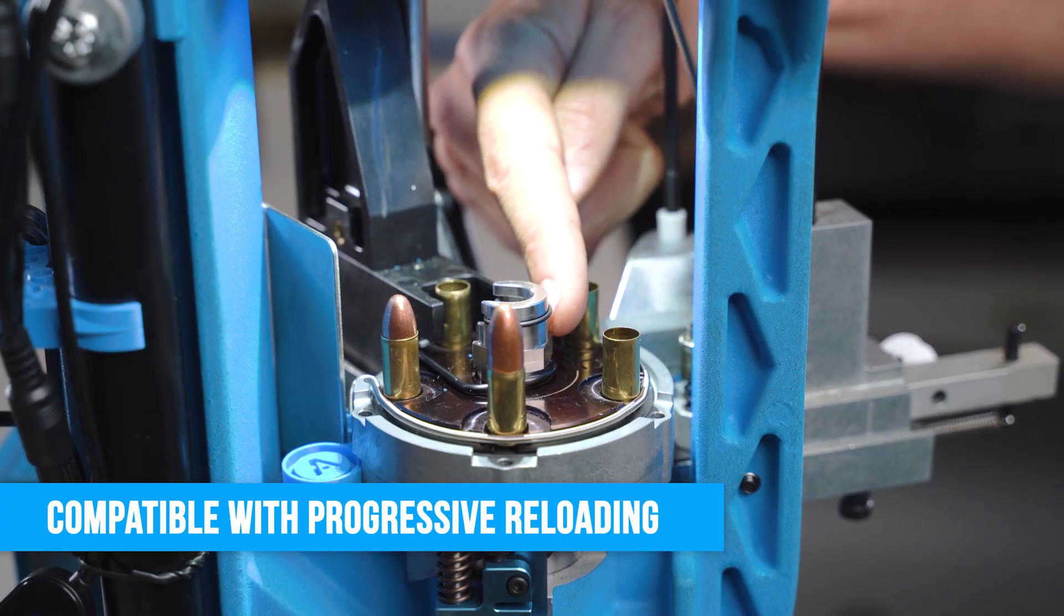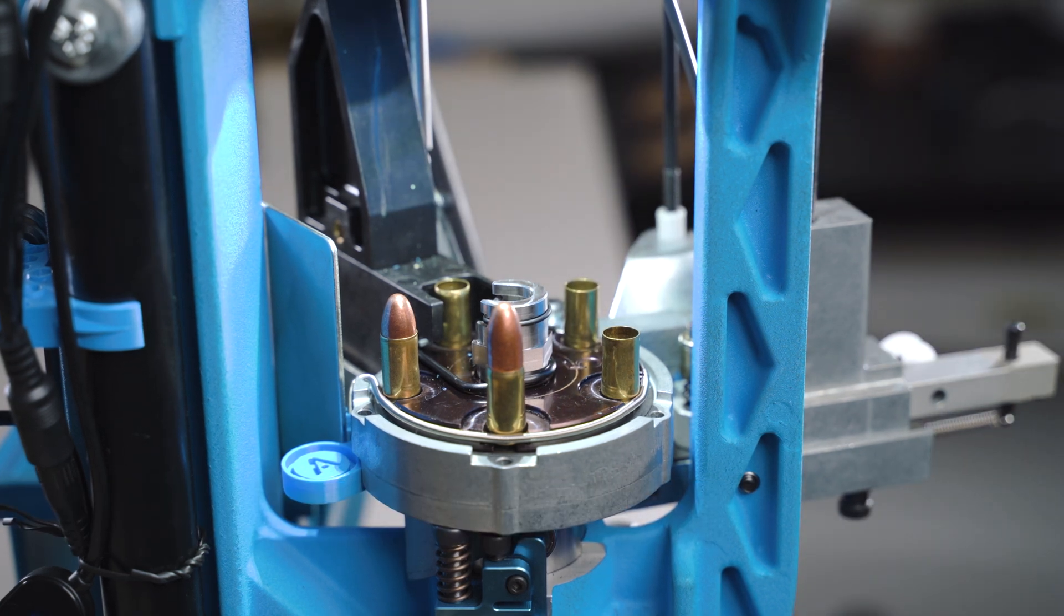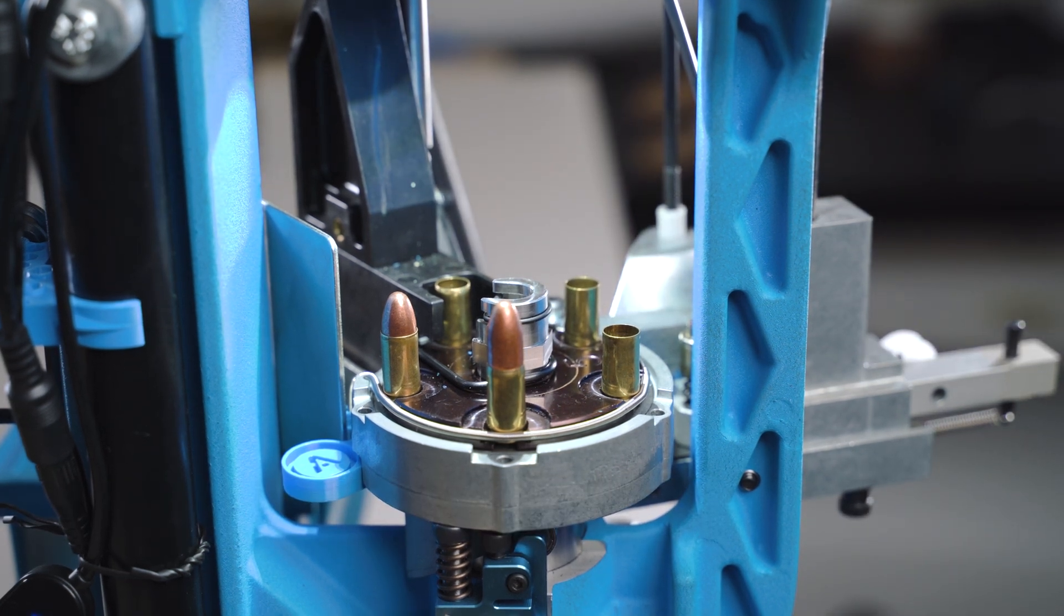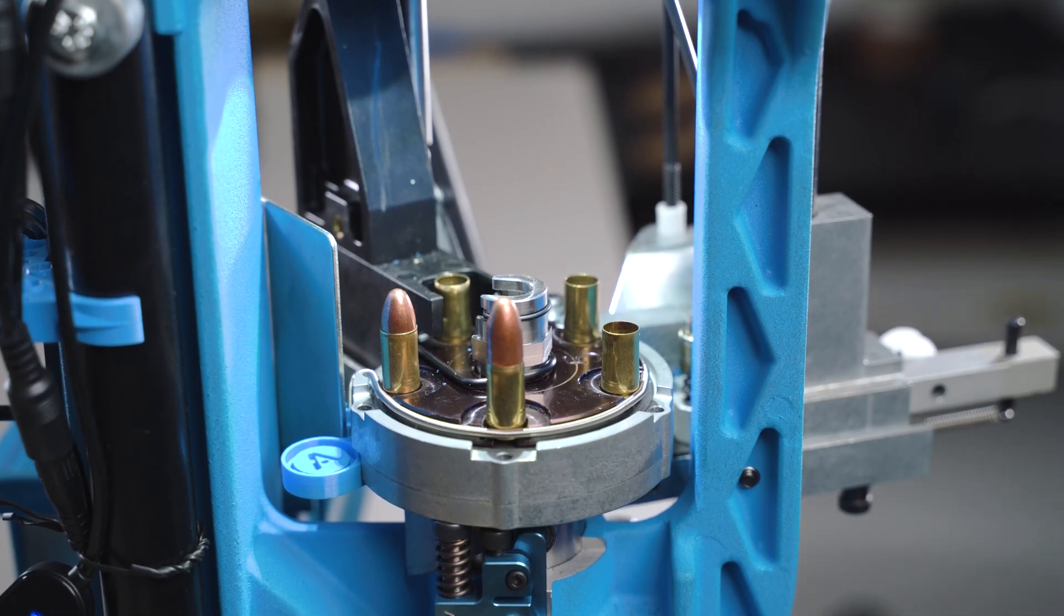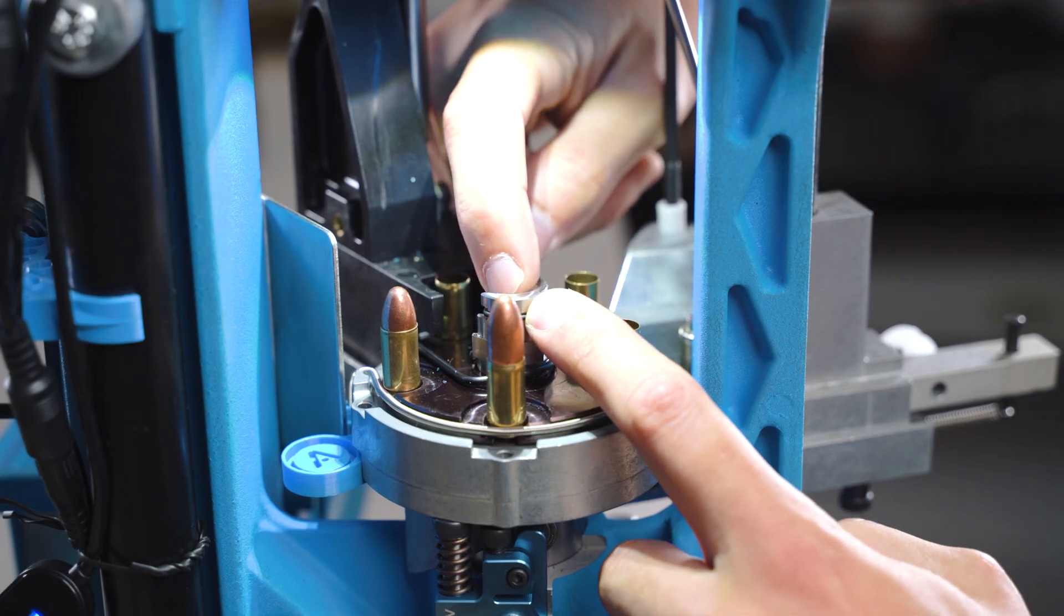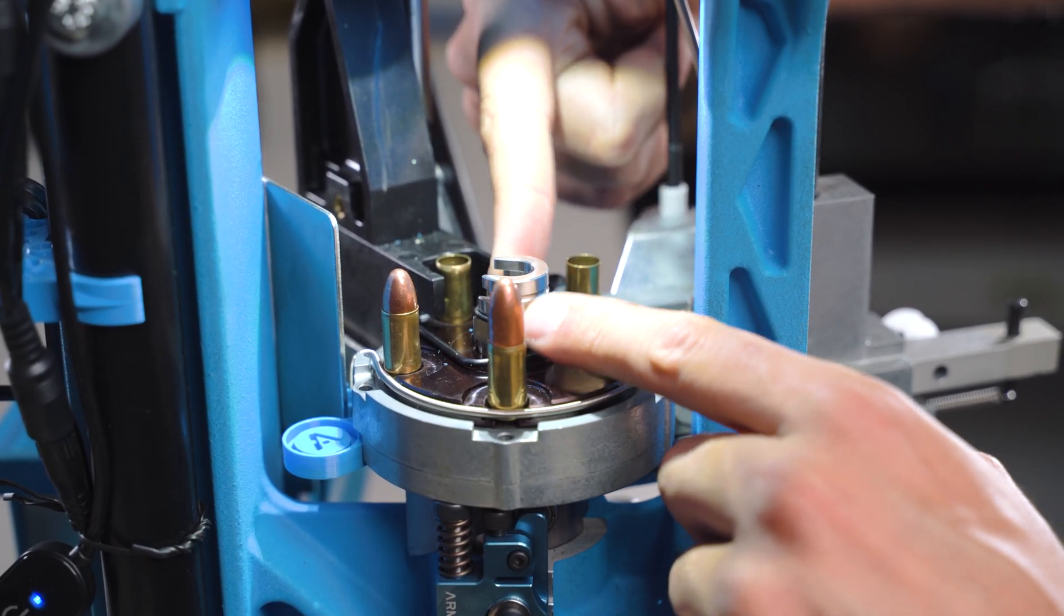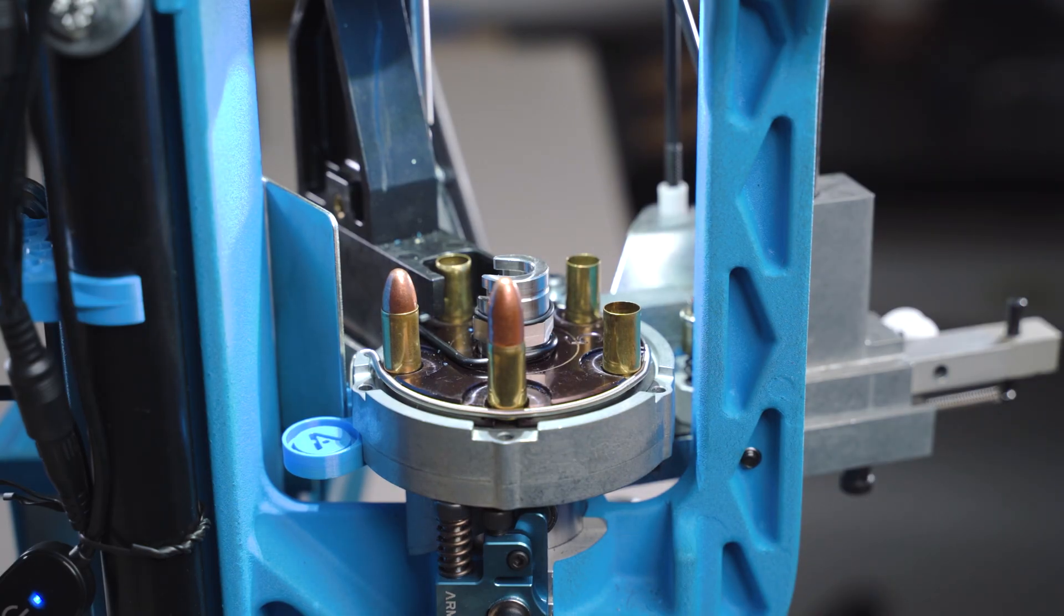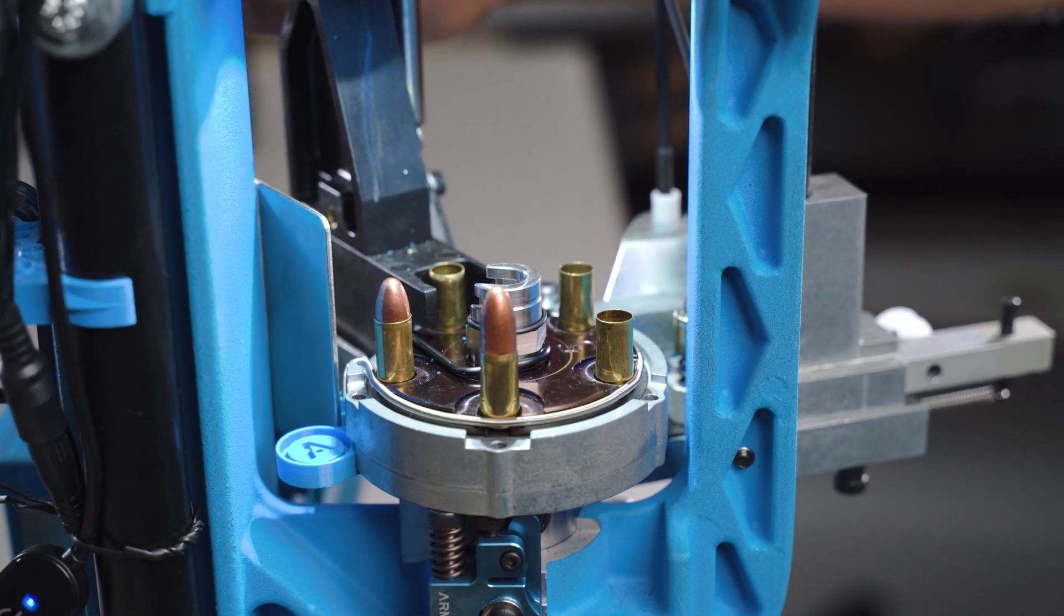I wanted to show you the shell plate bolt can stay in place. This makes changing between single stage reloading and progressive reloading super easy and simple. Just before you start progressive reloading be sure to pull down this rubber band to the lowest position so it will not interfere and this is everything you need to do.